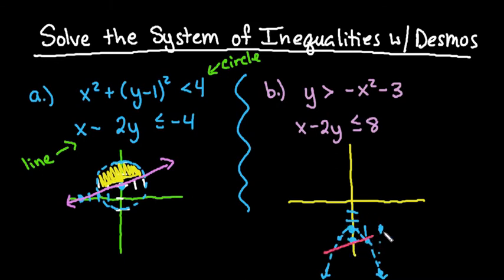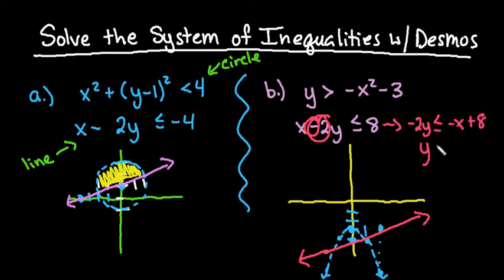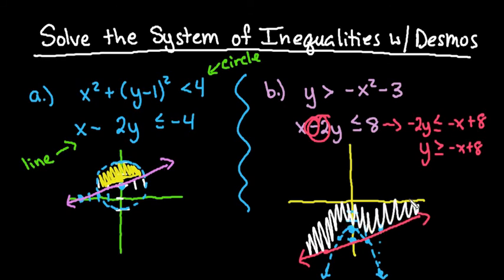This line would be solid. The reason it ends up being greater than is because if I were to solve this for y, I would have negative 2y less than or equal to negative x plus 8. When I divide everything by a negative, remember that it flips, so it becomes y is greater than or equal to negative x over 2 plus 4. So I can shade on the outside of the parabola and above the line.